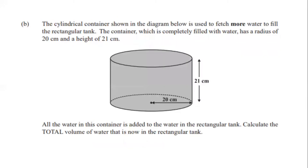Part B says: the cylindrical container shown in the diagram is used to fetch more water to fill the rectangular tank. The container is completely filled with water and has a radius of 20 cm and a height of 21 cm. All the water in this container is now added to the rectangular tank.